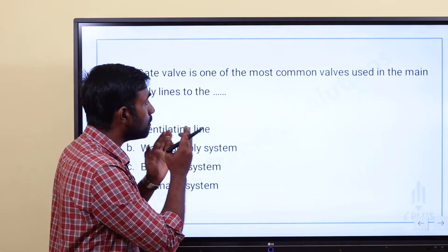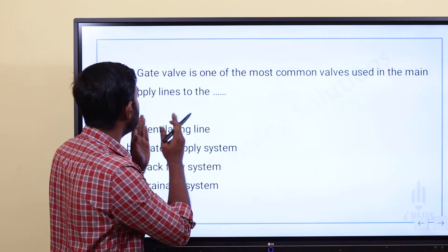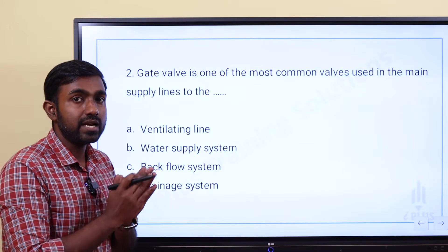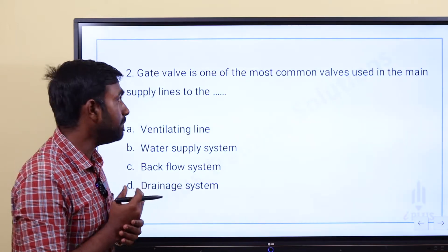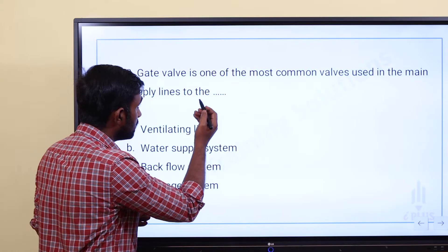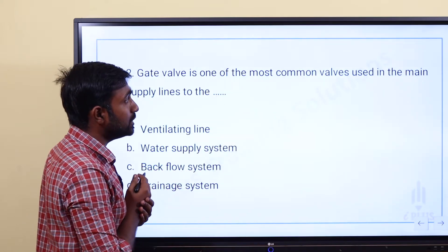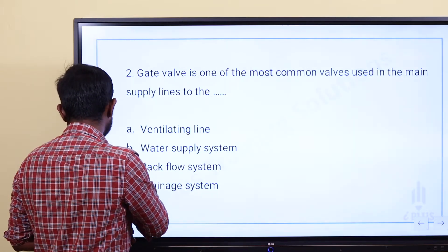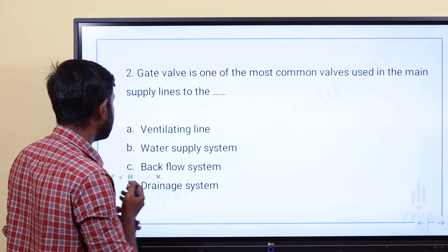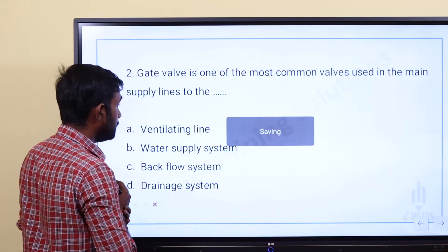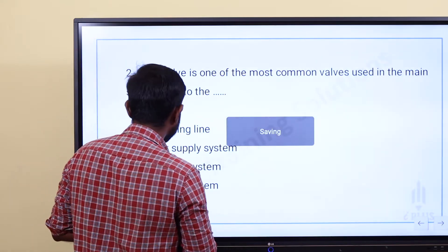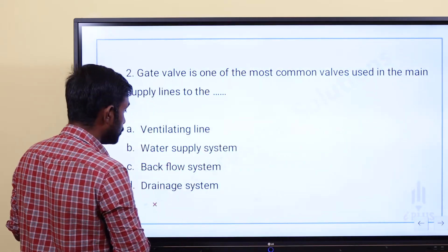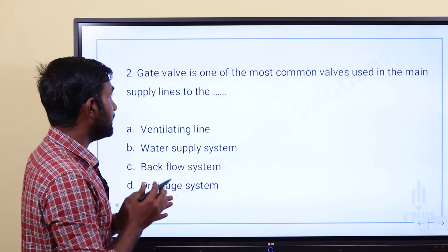Gate valve is one of the most common valves used in the main supply line. So if you want to show the gate valve — Option A: ventilating lines. Option B: water supply system. Option C: backflow system. Option D: drainage system.